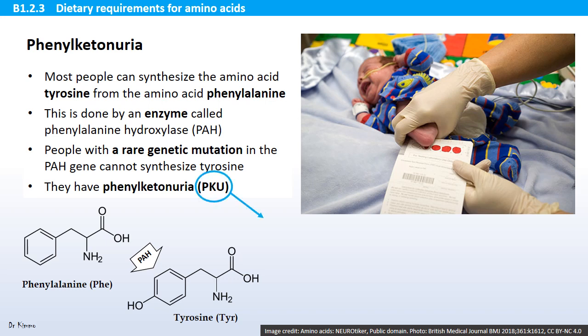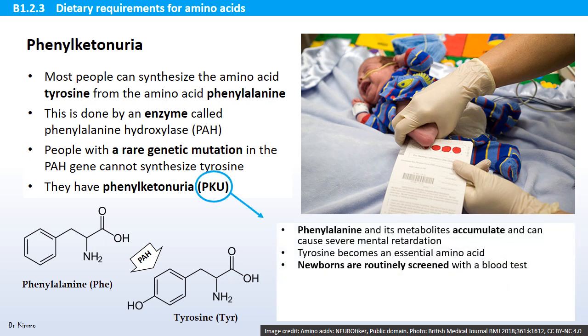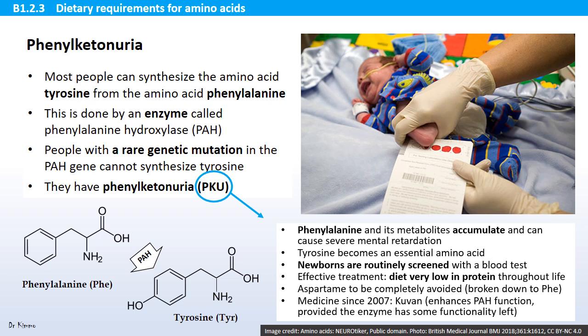What this leads to is that phenylalanine and its metabolites accumulate and can cause severe mental retardation. Also, tyrosine becomes an essential amino acid. However, newborns are routinely screened with a blood test and there is effective treatment — a diet very low in protein throughout life to keep the phenylalanine at an acceptable level.